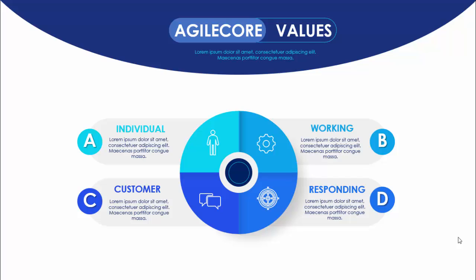In today's tutorial I'm going to show you a template on agile core values. I've added this header as 'Agile Core Values' and you can add some detailed text here. With the blue background given for the title, you can see there are four steps: the individual, working, customer, and responding — each with different icons and different shades of blue.